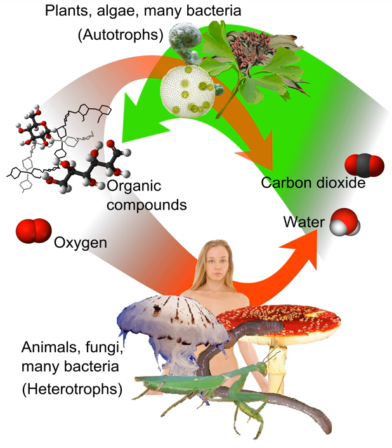Most eukaryotes and prokaryotes are heterotrophic; in particular, all animals and fungi are heterotrophs. Some animals, such as corals, form symbiotic relationships with autotrophs and obtain organic carbon in this way. Furthermore, some parasitic plants have also turned fully or partially heterotrophic, while carnivorous plants consume animals to augment their nitrogen supply while remaining autotrophic. Animals are classified as heterotrophs by ingestion; fungi are classified as heterotrophs by absorption.